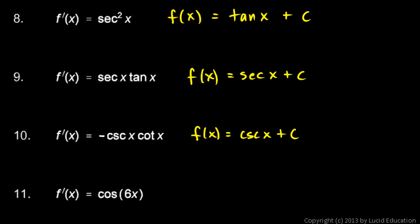One more here: f prime of x is cosine of 6x. Notice we've got a composite function here—cosine on the outside and 6x on the inside. So let's think about this. What function has the cosine as its derivative? Let's try the sine function, so sine 6x.